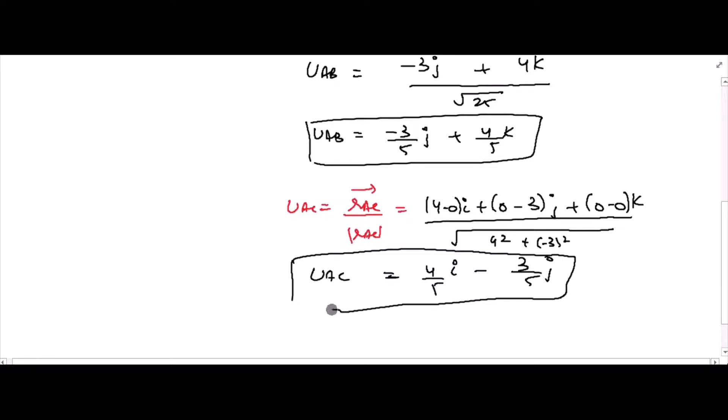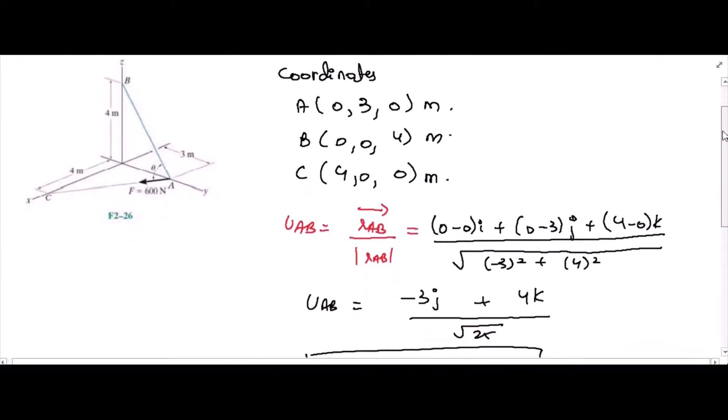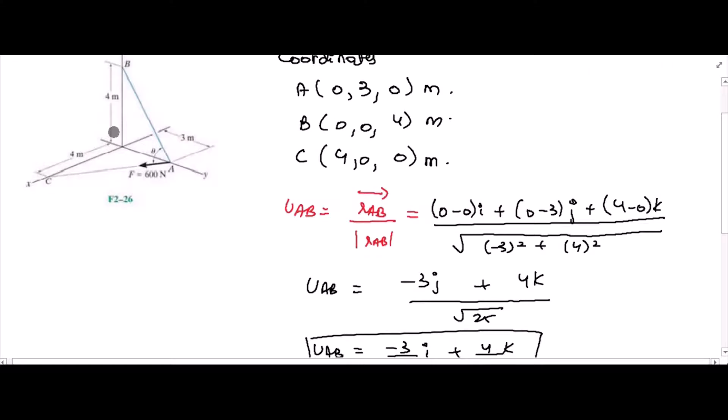Now, to find the direction between these two vectors, we have to use the approach of dot product. According to dot product rules, dot product between two vectors can be written as their magnitudes and the cosine of the angle between them.